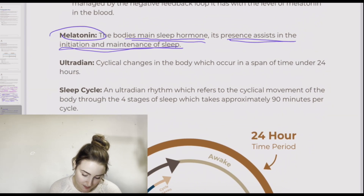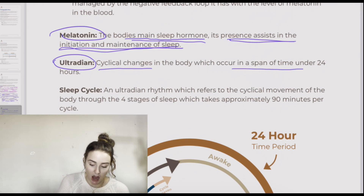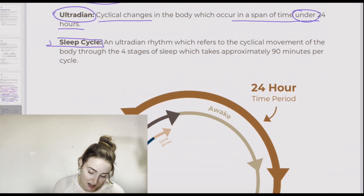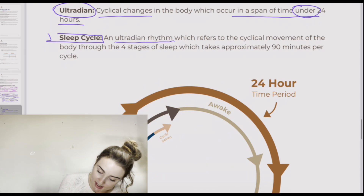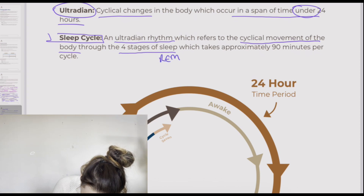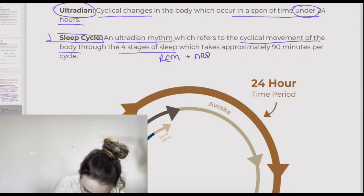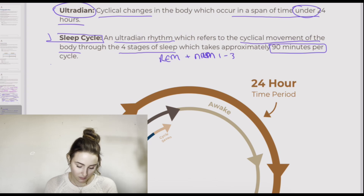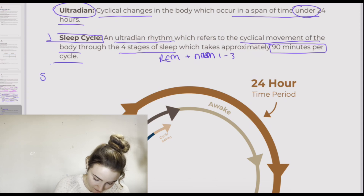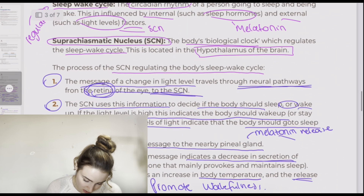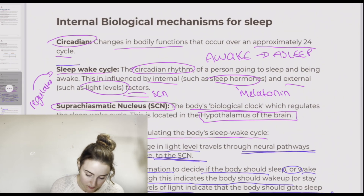Ultradian rhythms are cyclical changes in the body which occur in a span of time under 24 hours. A sleep cycle is a kind of ultradian rhythm, which refers to the cyclical movement of the body through the four stages of sleep — REM and NREM 1 through 3. It takes approximately 90 minutes per sleep cycle. It's important to remember the sleep cycle is ultradian, whereas the sleep-wake cycle is circadian.